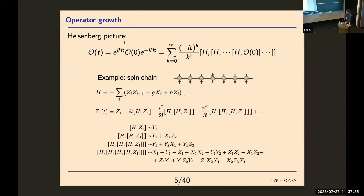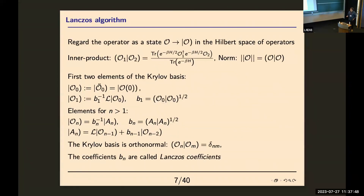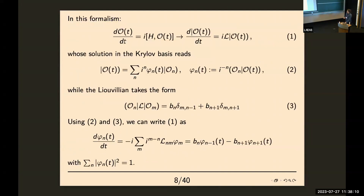Keiju discussed his results for infinite temperature. We are going to be discussing our results at finite temperature, so our inner product is a bit different — we just have these factors of e to the beta H over 2, which defines the Wightman inner product. The basic idea is that you start with the Heisenberg equation of motion, and using the Lanczos algorithm you end up with some sort of discretized version of the Schrödinger equation. These wave functions are basically given by overlaps of your operator with the operators in the Krylov basis. As you move through the Krylov chain, the operator gets more and more complicated.